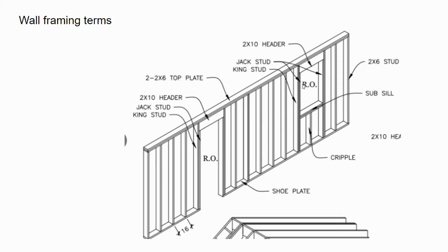For a window opening, there's a sub sill — one or two 2x6s below the header. With advanced framing, a single 2x6 sill allows more insulation. Every place we have wood is a thermal bridge, so we reduce studs to maximize insulation. Below the sill, cripples are placed wherever the spacing requires them. The key framing terms are: common stud, king stud, jack stud, cripple, header, top plate, and shoe plate.